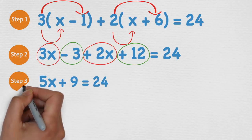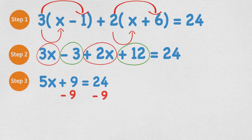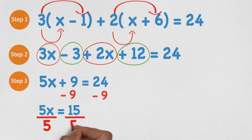The last step now, we can take 9 from both sides, as it is the inverse operation to positive 9. This leaves us with 5x = 15. And then the inverse operation of times 5 is divided by 5. So we divide both sides by 5 and we are left with x = 3, which is our final answer.